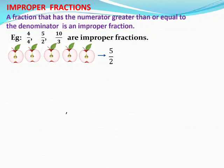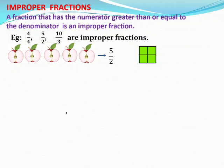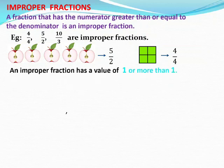Let us see one more example of improper fraction. Here you can see the square is divided into 4 equal parts. All 4 parts are shaded — the whole part is shaded. So we can write the fraction as 4 by 4. Here 4 by 4 means full, that is 1. The value is 1. In 5 by 2, we see that it is more than 1. So you have to remember that an improper fraction has a value of 1 or more than 1.